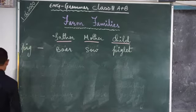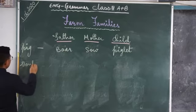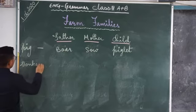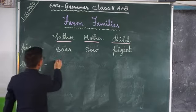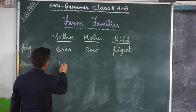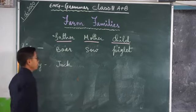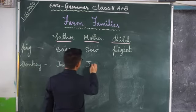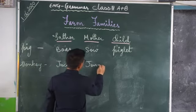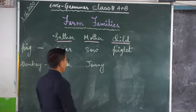Let's see the family of donkey. In the family of donkey, the father is called jack, and the mother is called jenny.